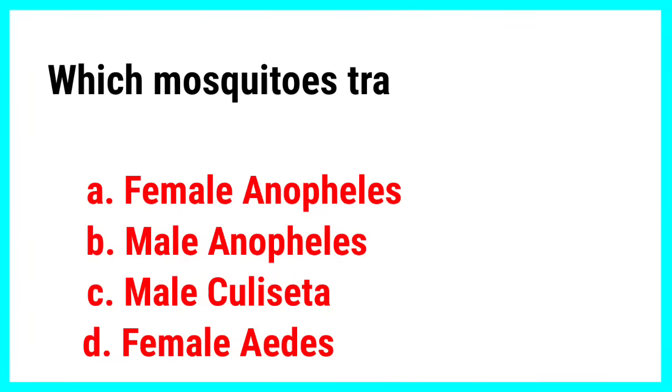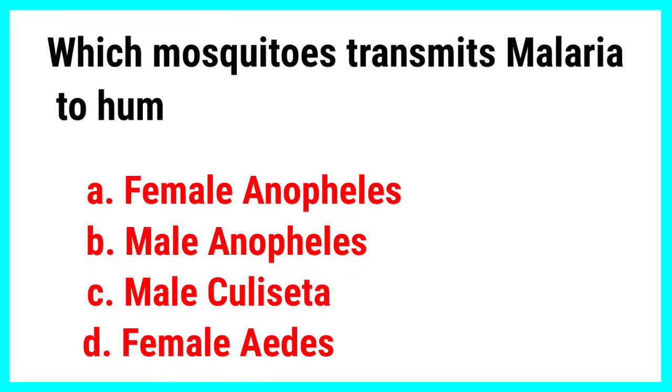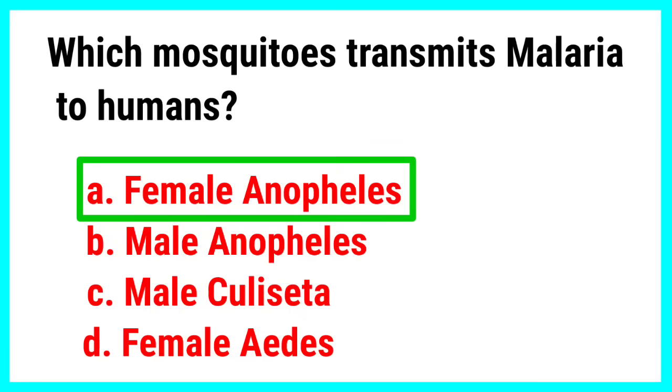Which mosquito transmits malaria to humans? Correct answer is female anopheles.